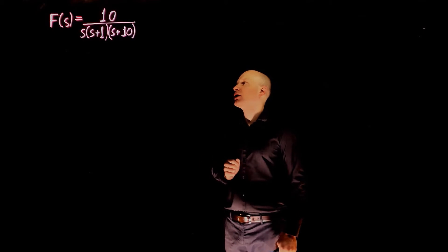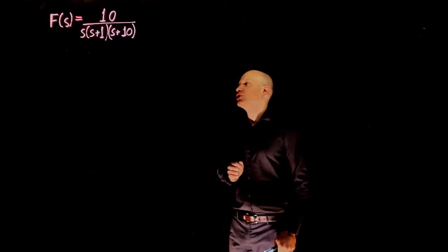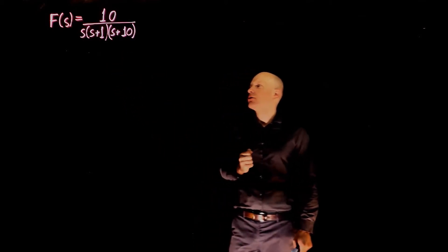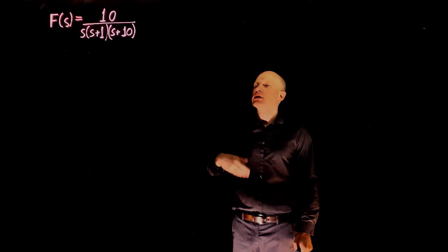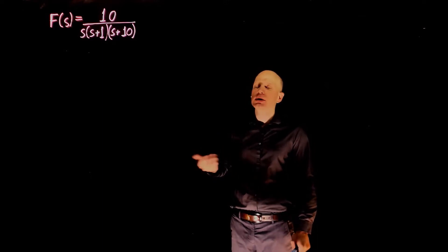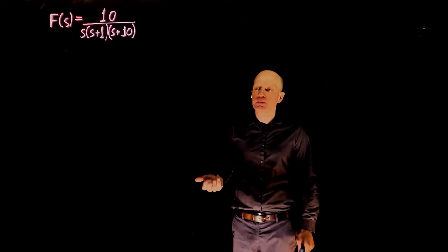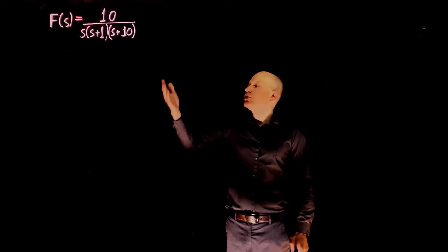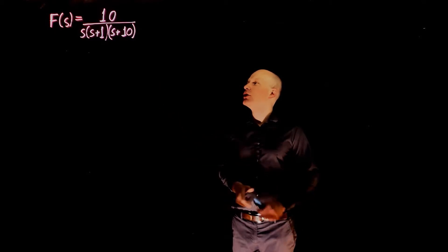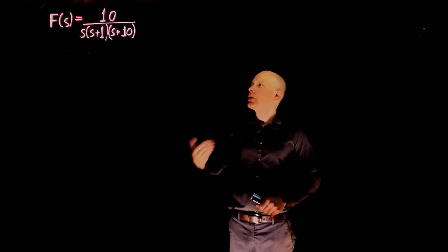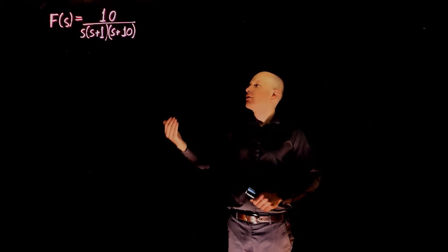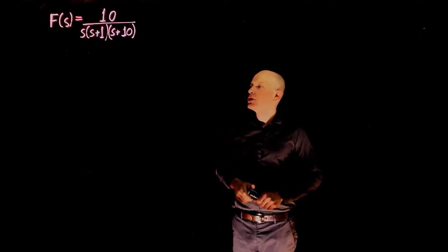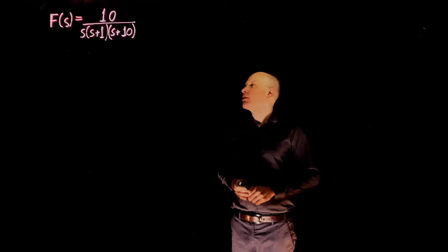We have two ways to find the final value of this function. The first is to find the inverse Laplace of F(s) and then take the limit of that function when t tends to infinity. The second way is to use the Final Value Theorem, which does not require finding f(t) directly from F(s) — and is much faster.